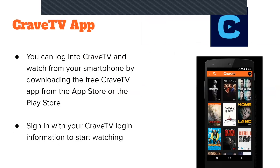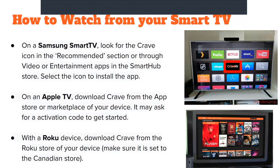There is also a Crave TV mobile app for smartphones and tablets. Download it from the App Store or Play Store and use the same login information to start watching. For a Samsung Smart TV, look for the Crave icon in the recommended section or through video or entertainment apps in the Smart Hub store. On an Apple TV, download Crave from the App Store. It may ask for an activation code. For a Roku device, download Crave from the Roku store and make sure it is set to the Canadian store.